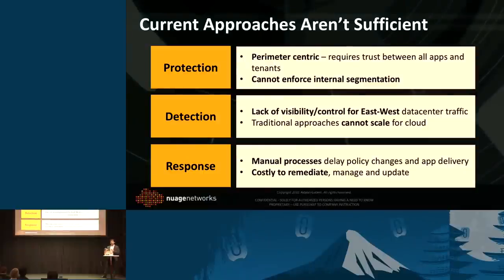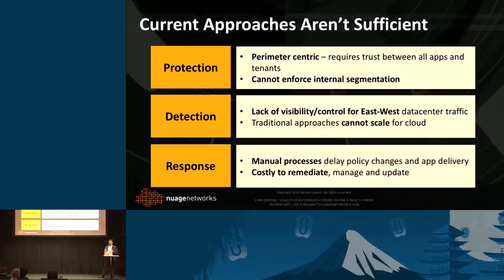Using current approaches to address these challenges has its own set of problems. Within the perimeter, you have a lot of high-security products built for that purpose, but it's difficult to assign those for east-west security problems. In terms of detection, it's very expensive to have IPS and IDS to monitor the increasing volume of traffic between east and west in the data center. And because of a lot of the manual processes and ACLs and firewall rules, it's difficult to take action once a threat has been detected.